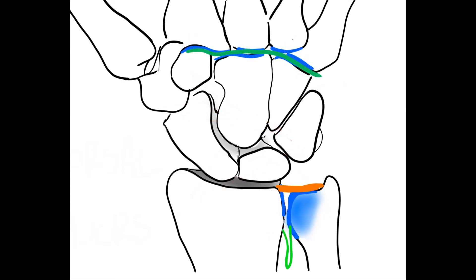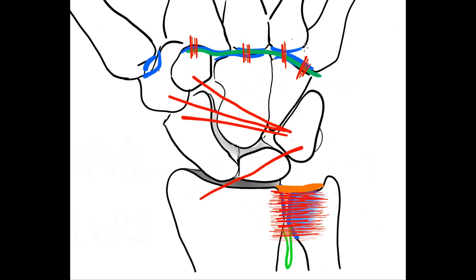The thumb carpometacarpal joint is special. It is comprised of the trapezium and the base of the first metacarpal. It is a saddle synovial type of joint and highly mobile. The intermetacarpal joints are plain synovial joints in between the bases of the second to fifth metacarpals. Distal to the cartilaginous articular surfaces, there is a syndesmosis, which is the interosseous metacarpal ligament. The stability is complemented by the dorsal and palmar interosseous intermetacarpal ligaments.